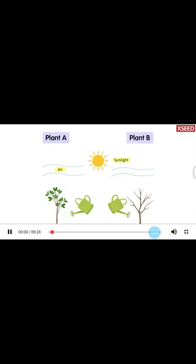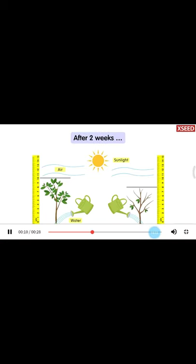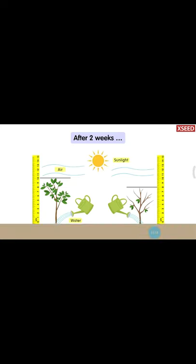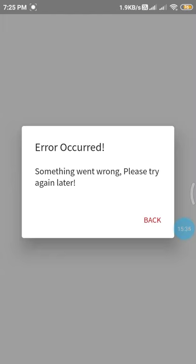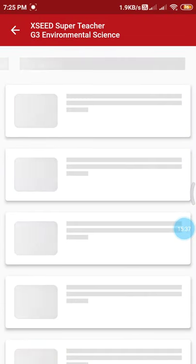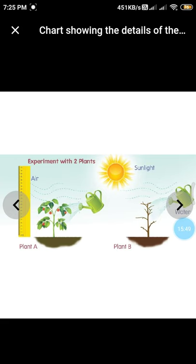Two plants were watered for two weeks. They grew differently — both got air, sunlight, and water, but one had leaves and the other didn't. They had different amounts of food. Leaves make food for the plant. In both plants you can see the height difference: one plant with leaves is growing healthily, but plant B without leaves cannot prepare food and may die.